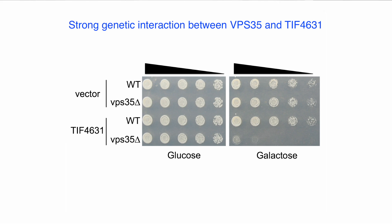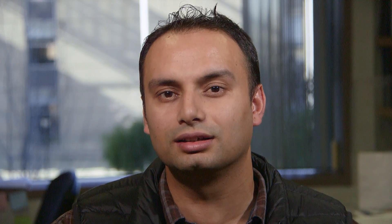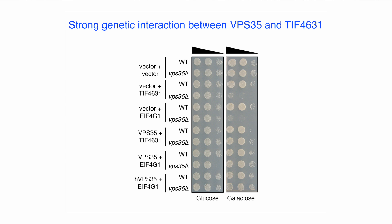We then used automated image analysis software to compare the size of colonies in order to identify double mutants that grew worse when compared to either of the single mutants. I also performed experiments to test for other ways that VPS35 and TIF4631 might interact with each other. I upregulated one gene and then deleted the other and vice versa. These experiments revealed a really striking interaction between VPS35 and TIF4631. When I upregulated TIF4631 or the human EIF4G1 in wild-type cells, there was no effect on growth. However, when I upregulated these genes in VPS35 mutant yeast cells, it was highly toxic.